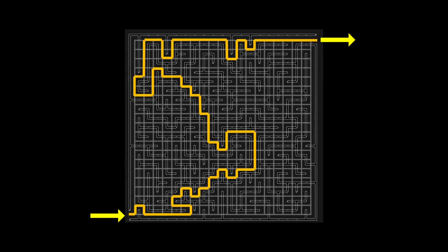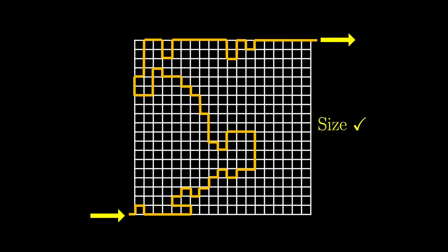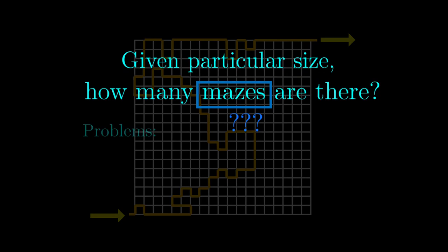So I narrowed down the question into thinking only about the solution path. Then this path lies on a particular grid, and so we can talk about the size of the grid.